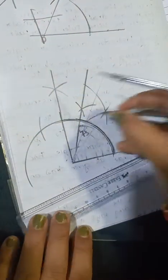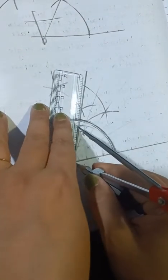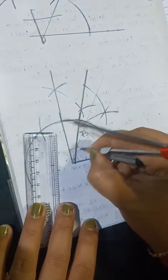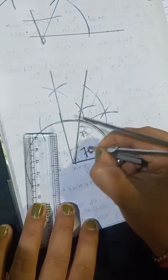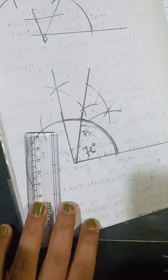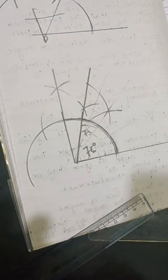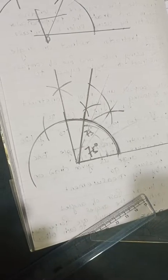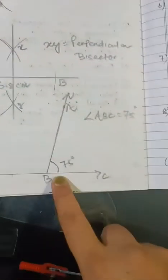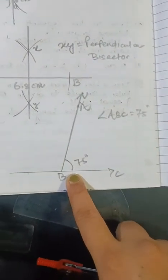Now this is 75 degrees. So this is the angle 75 degrees using the ruler and compass, and before this we drew 75 degrees using the protractor.